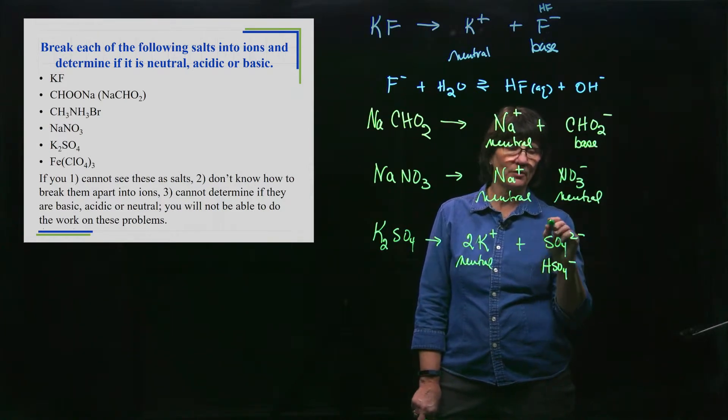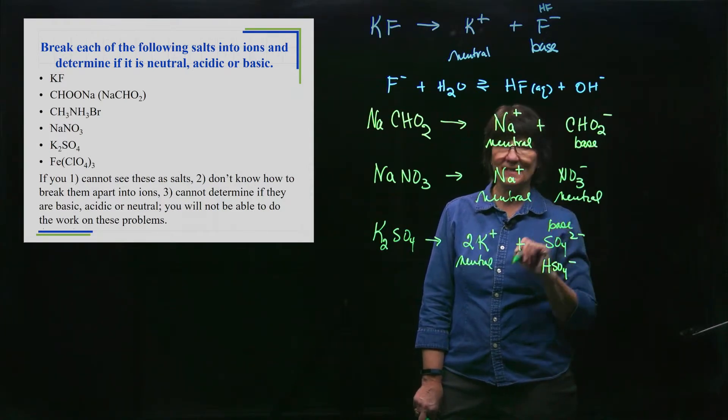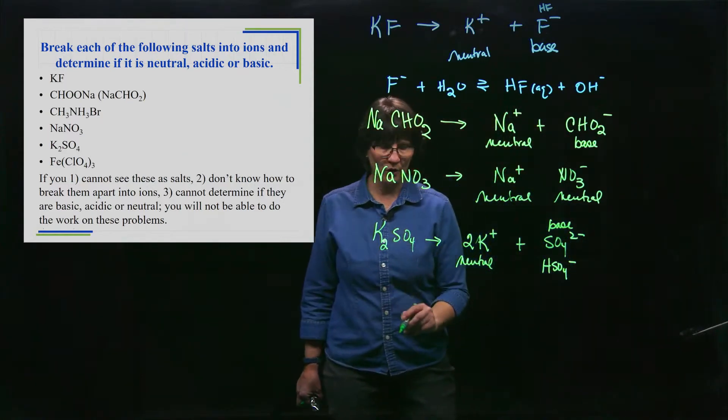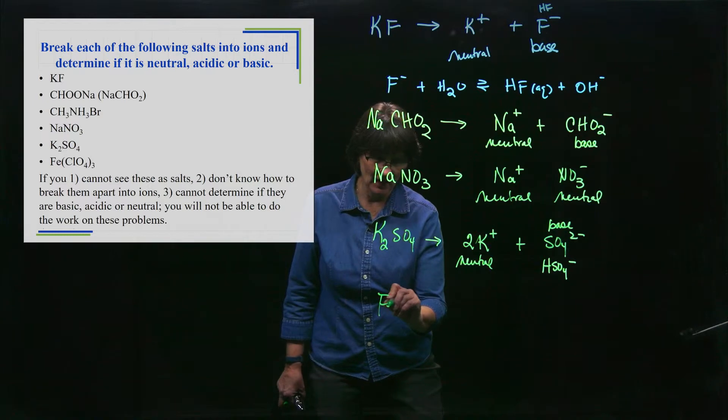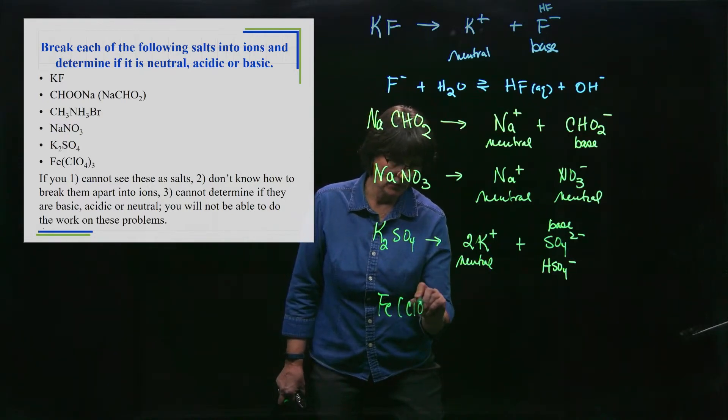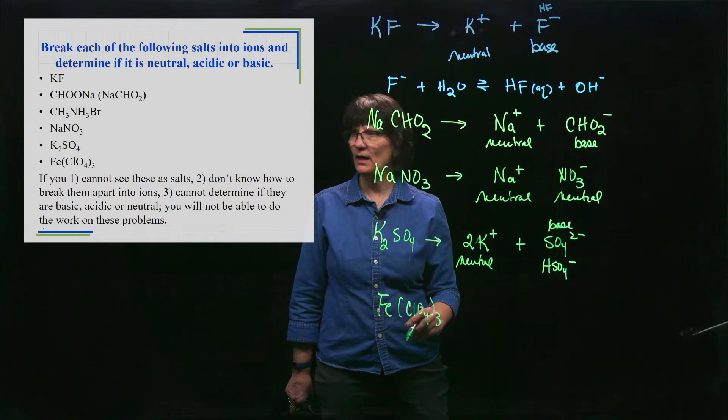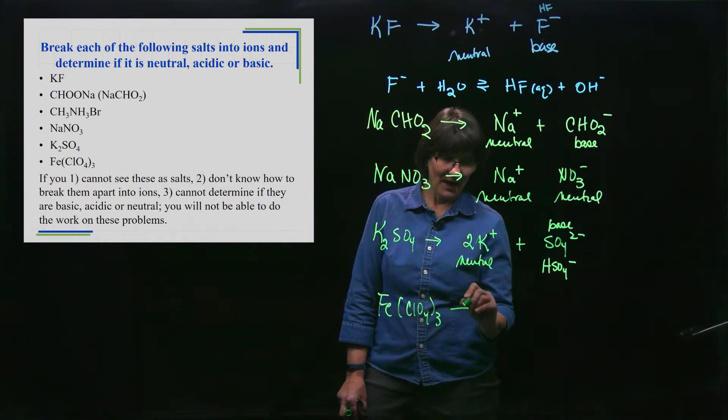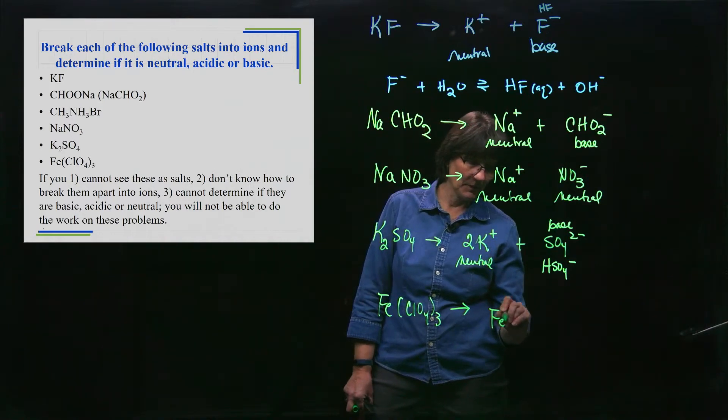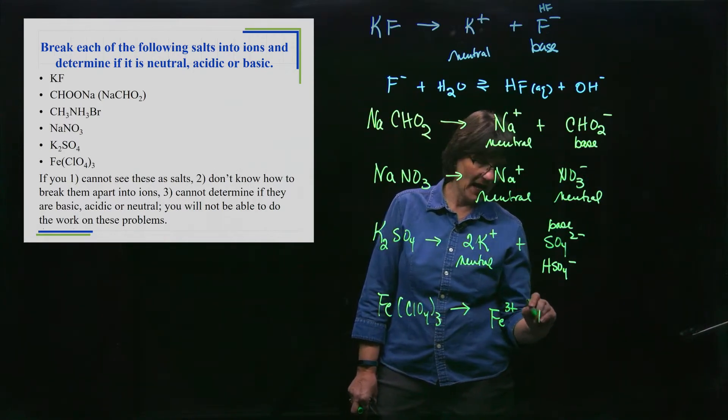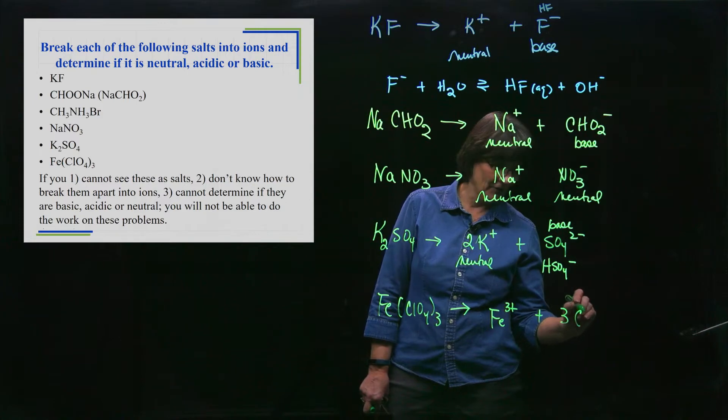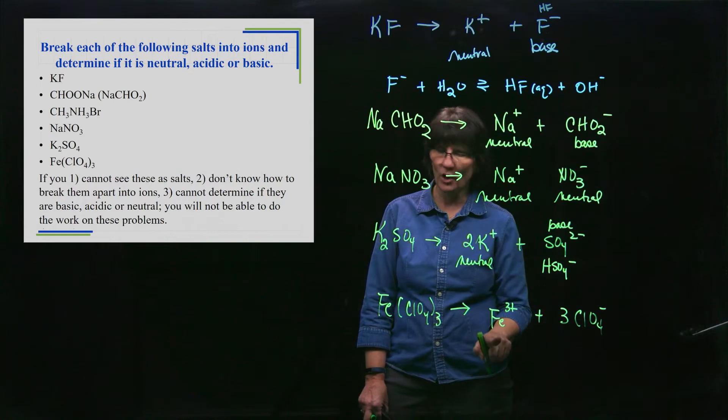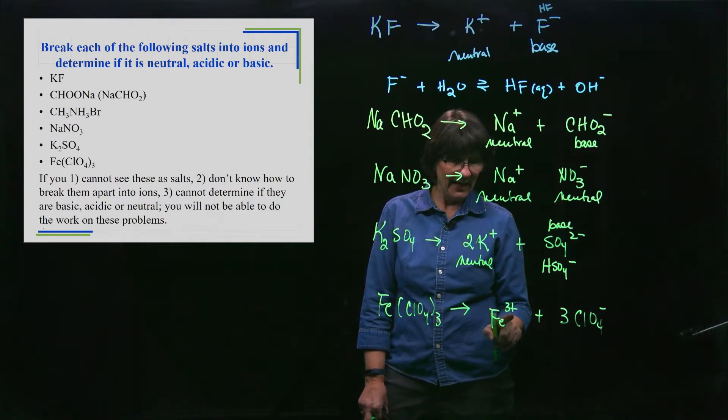Fe(ClO4)3 - ionic compound. We have iron with a 3+ charge and we have three of the perchlorate ions. So we start with this guy.